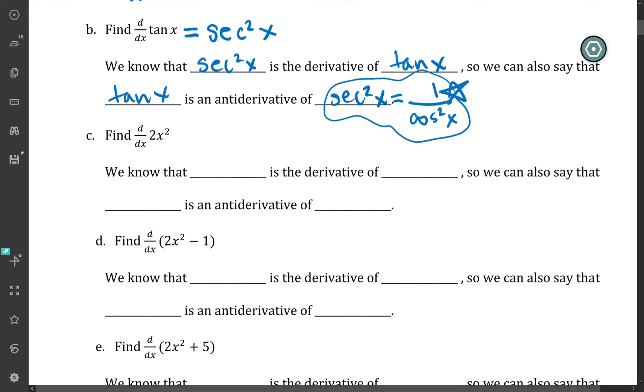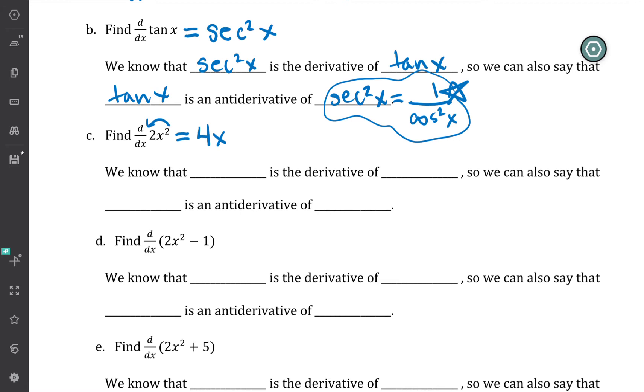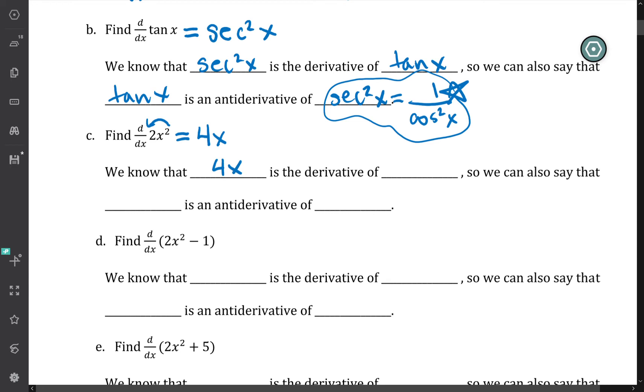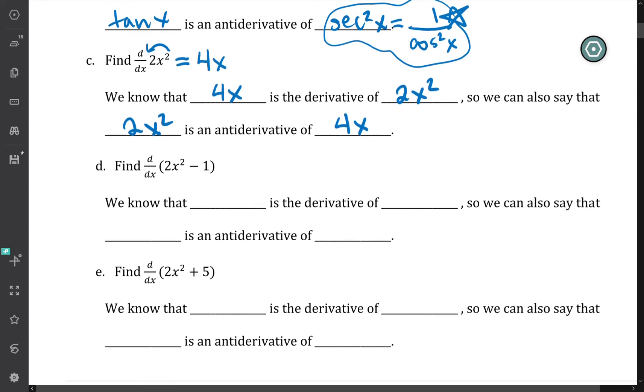If we want to take the derivative of 2x², that's another power rule, so we'll drop the 2 down in front and we'll say we have 4. We'll replace the old power with 1 less, which means our new power will be 1. So we can claim that 4x is the derivative of 2x², which means that we know that 2x² is an antiderivative of 4x.